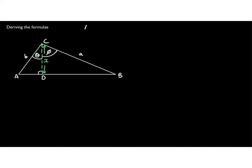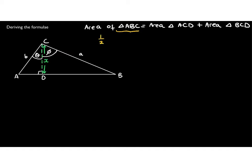Now let's think about areas of these triangles. The area of triangle ABC, the larger triangle, equals the area of triangle ACD plus the area of triangle BCD — the two smaller triangles add up to the larger one. The area of triangle ABC equals a half times a times b times sine of the angle in between, which is theta plus phi.